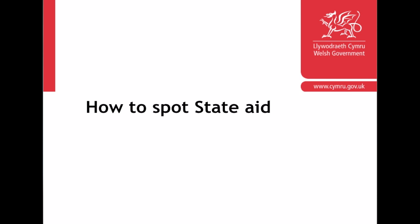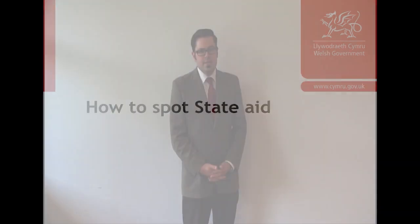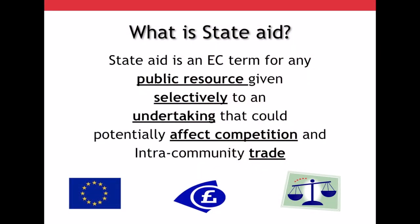How to spot state aid. What is state aid? On the screen now you'll see a quote from Article 107A of the Treaty on the Functioning of the European Union. State aid is any public resource given selectively to an undertaking which could potentially affect competition and intra-community trade.